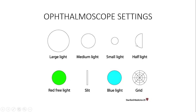Use the half light when half of the cornea is opaque and the other half is transparent, or half of the pupil is blocked by something and the other half is transparent, or half of the crystalline lens is opaque and the other half is transparent.